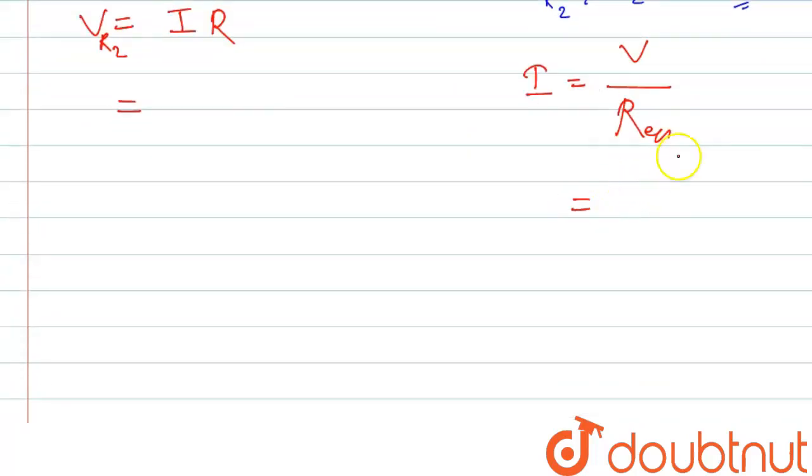So we can write here the voltage, that is 12, and R equivalent, that is 500 plus 1500.